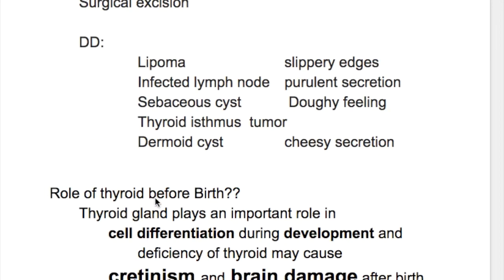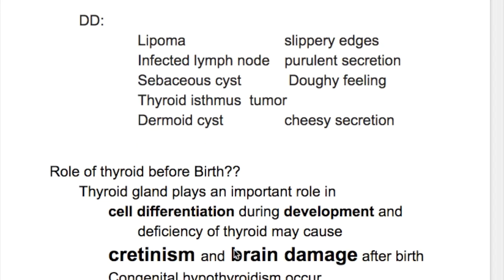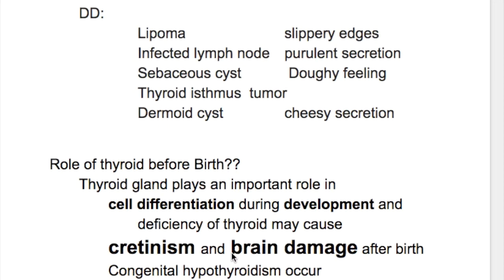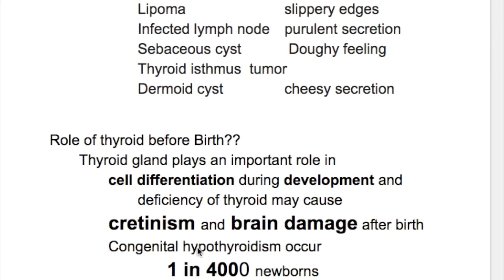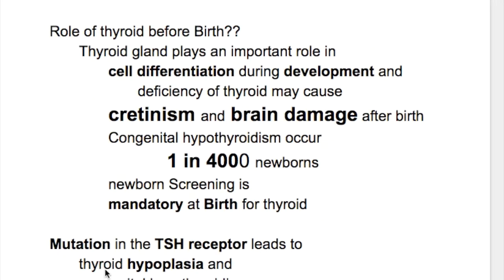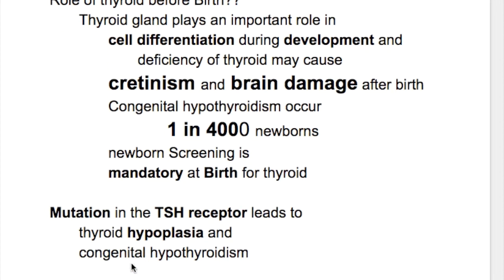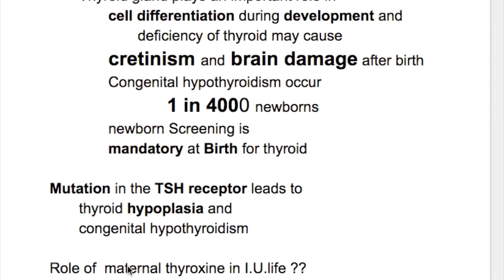What's the role of thyroid gland before birth? Thyroid gland plays an important role in cell differentiation during development, and a deficiency of the thyroid may cause cretinism and brain damage after birth. Congenital hypothyroidism occurs in 1 in 4,000 newborns. Newborn screening for thyroid is mandatory at birth because it causes preventable mental retardation. Also, mutation in the TSH receptor leads to thyroid hypoplasia and congenital hypothyroidism.